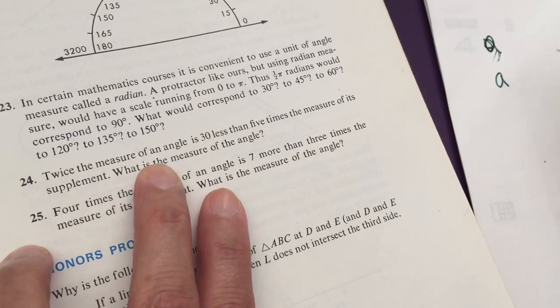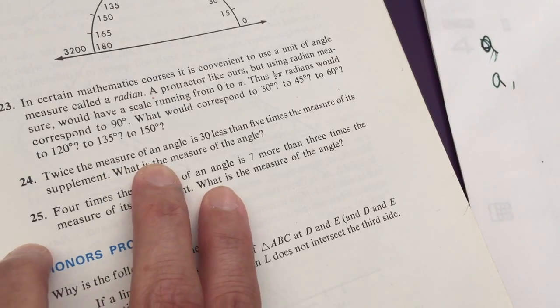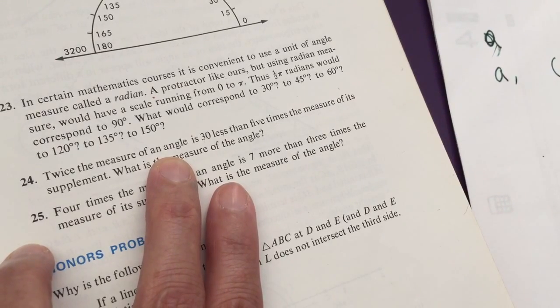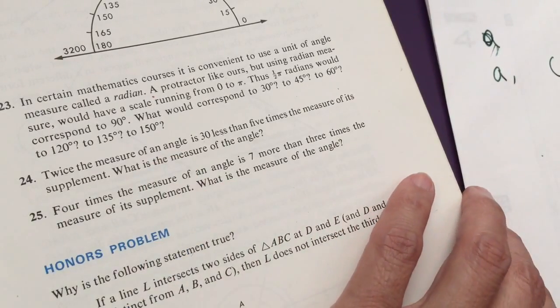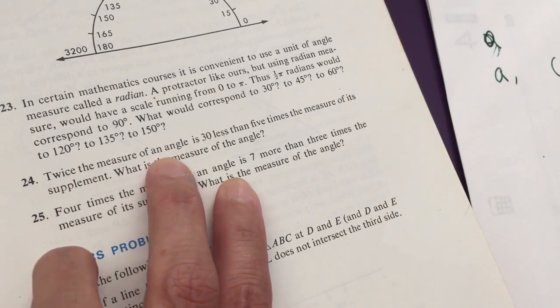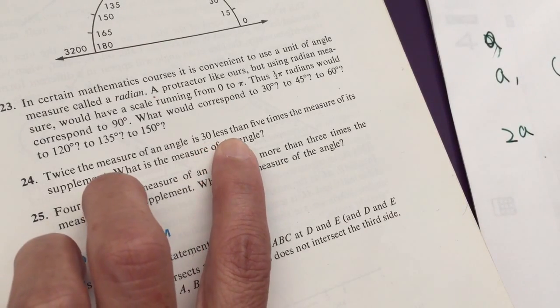Twice the measure of the angle A, and its supplement is 180 minus A, right? Make sense? Okay, so twice the measure of angle A, 2A, is 30 less.